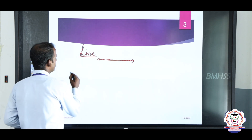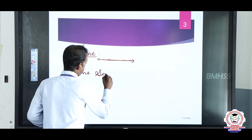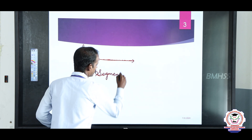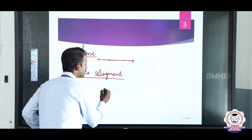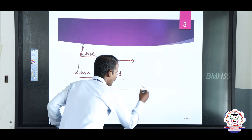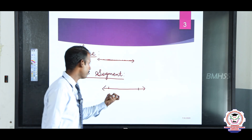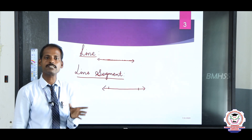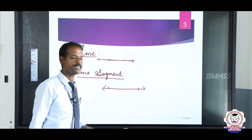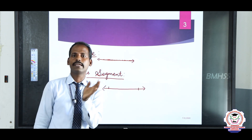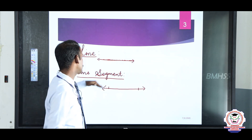Next one: line segment. What is a line segment? A line with two fixed points — a starting point and an ending point — is called a line segment. What is the difference between a line and a line segment? A line has no end points, but a line segment has two ending points: one starting point and one end point. That is called a line segment.